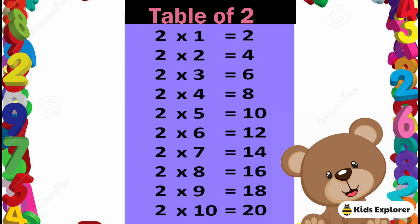Table of 2. 2 1's are 2, 2 2's are 4, 2 3's are 6, 2 4's are 8, 2 5's are 10, 2 6's are 12, 2 7's are 14, 2 8's are 16, 2 9's are 18, 2 10's are 20.